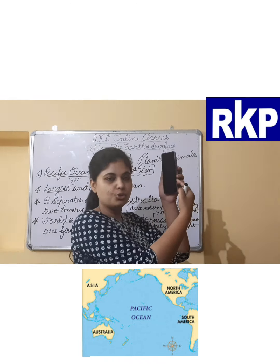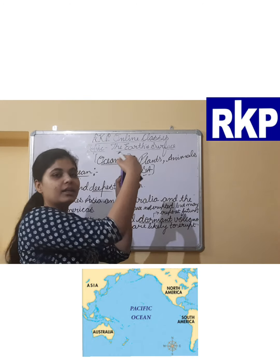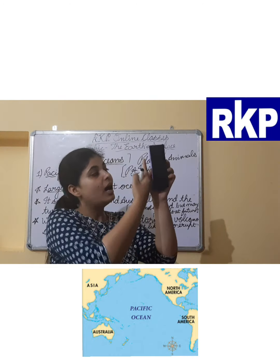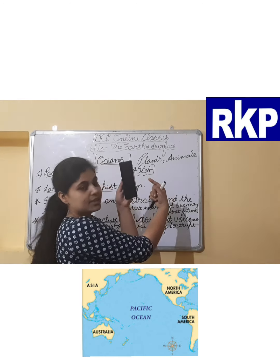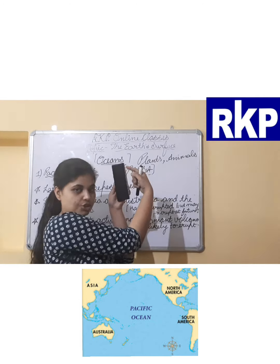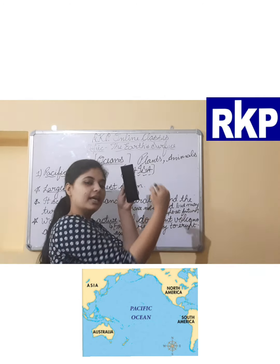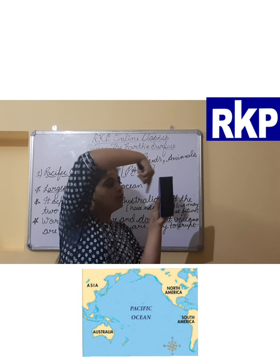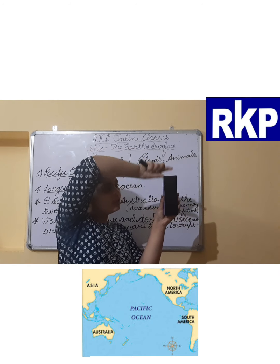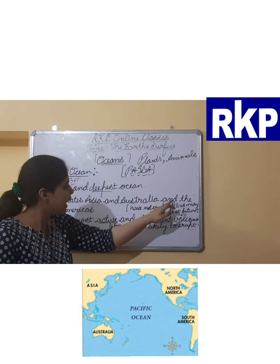The Pacific Ocean is the largest because it occupies more than half — approximately 30 percent — of the water present on the Earth's surface. It separates Asia and Australia from the two Americas. Look at the world map on page number three: you can see the Pacific Ocean between these continents.